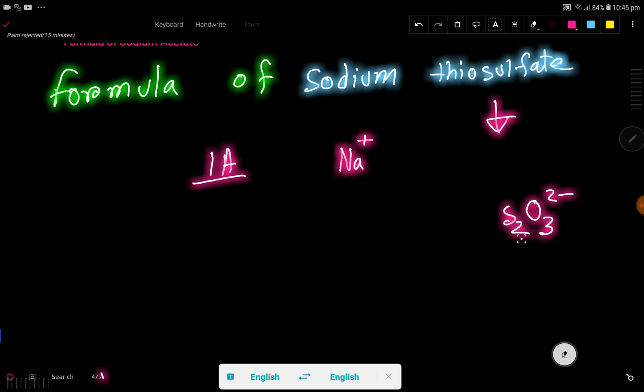This is the formula of thiosulfate, S2O3 2-. This is a polyatomic anion. To write the formula of sodium thiosulfate, we have to write this cation and anion side by side. So let us write this.